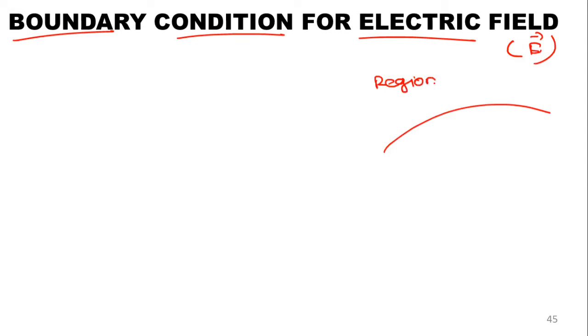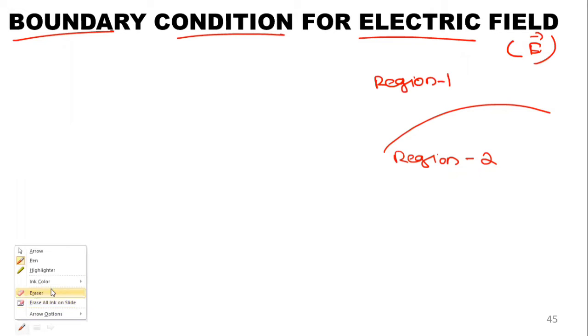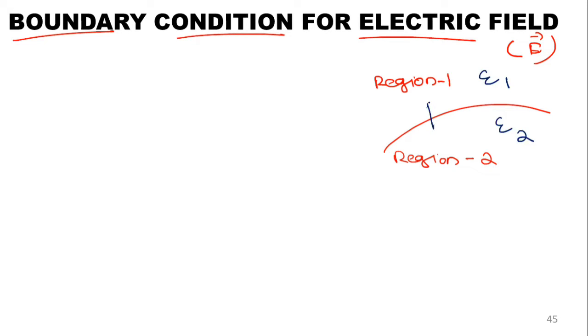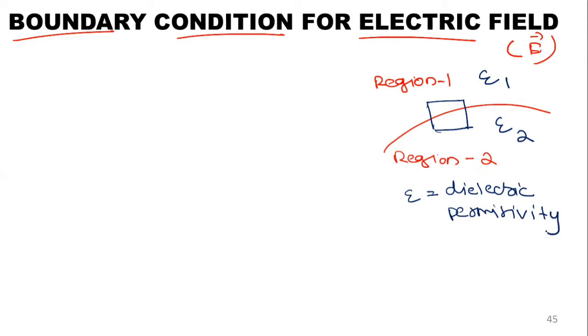Electric field is denoted by the symbol E. We will consider two regions — let this be region one and let this be region two. The dielectric permittivity of region one is epsilon one, and for region two it is epsilon two. We consider a surface here covering both regions, where the upper part has permittivity epsilon one and the lower part has permittivity epsilon two.